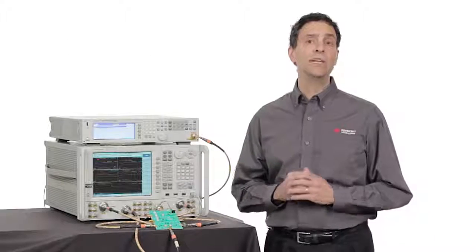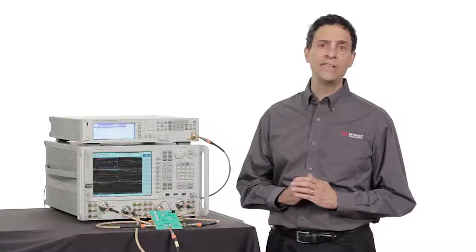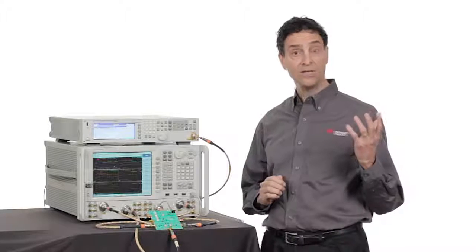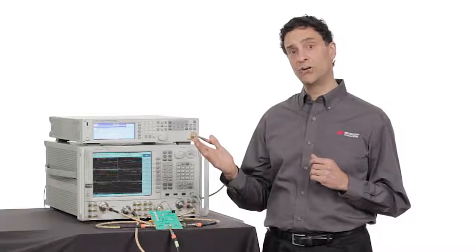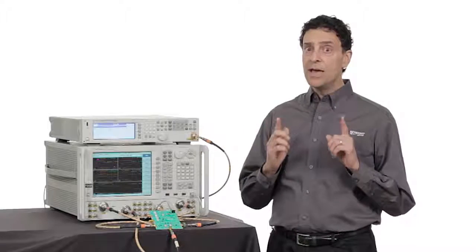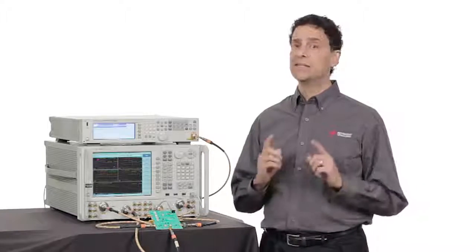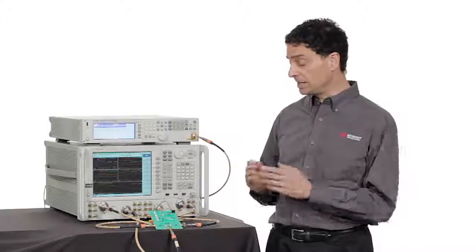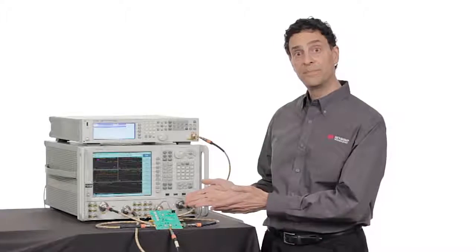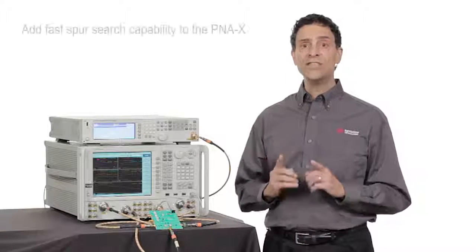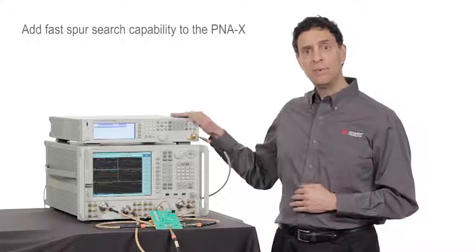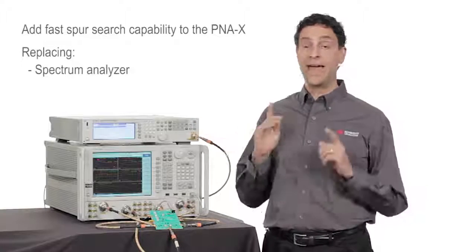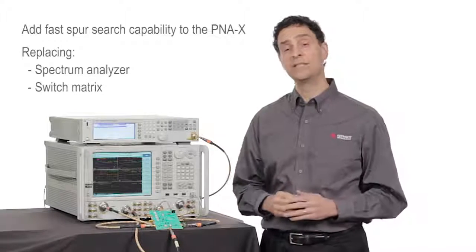These measurements can be performed many times faster compared to those done with the traditional approach using a spectrum analyzer and stand-alone signal generators. However, a spectrum analyzer remains an essential tool to measure undesired spurious signals coming from the converter. The new PNA option adds fast spur search capability to the PNA-X, replacing a stand-alone spectrum analyzer and switch matrix in your test systems.